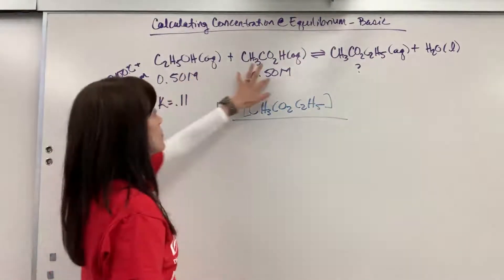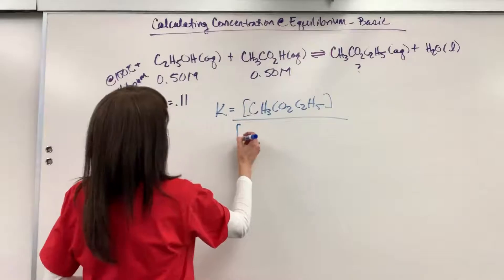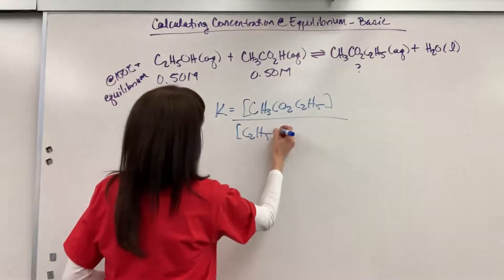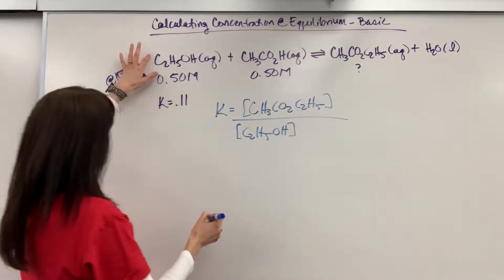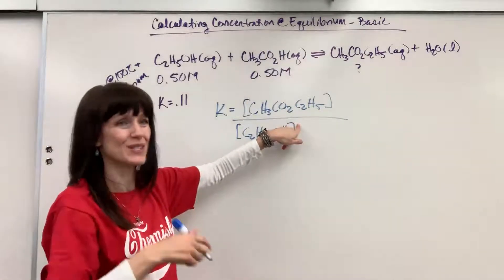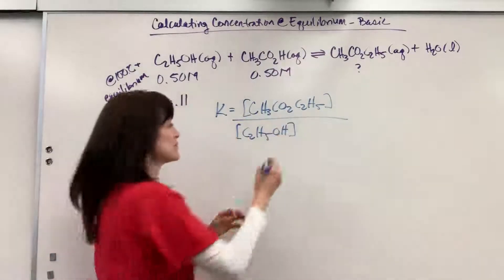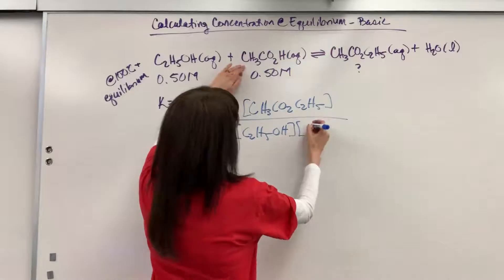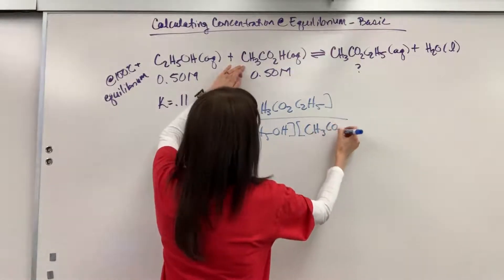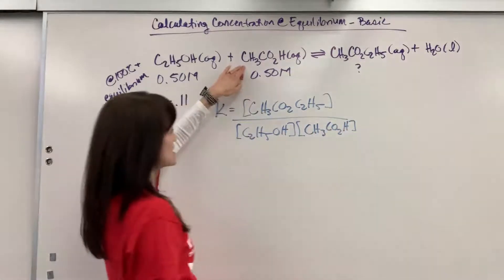Divided by the reactants, which are both aqueous, we have C2H5OH with a coefficient of 1, so an exponent of 1, times C3CO2H, the acetic acid.